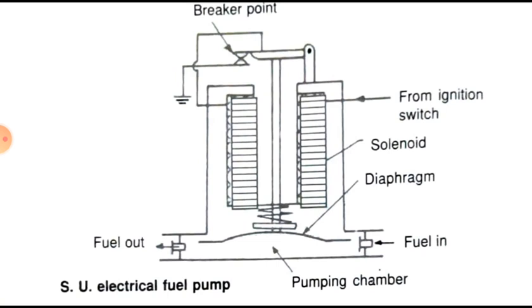The fuel fills the chamber. Then the breaker point contact breaks and the magnetic current is cut. The diaphragm spring pushes back, pumping the fuel out through the outlet. This is the electrical fuel pump.